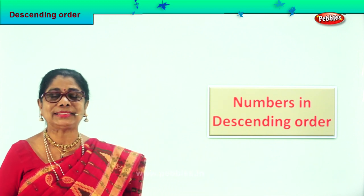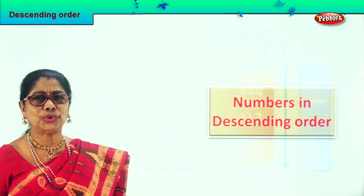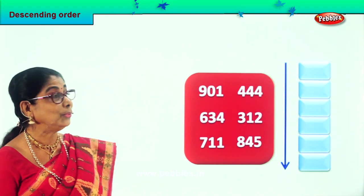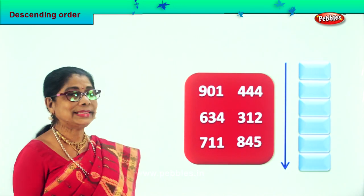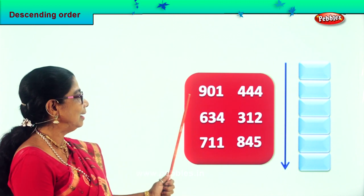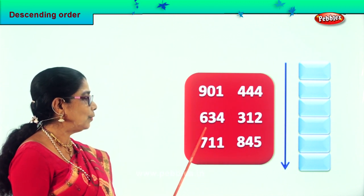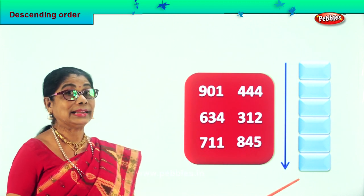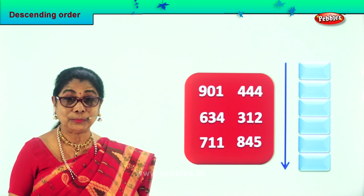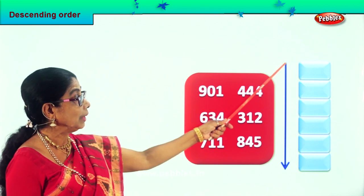Let's take our first sum. I am sure you are going to enjoy. Just as you learned ascending, we are going to do descending order. Again here, one, two, three, four, five — there are six numbers given to us. We have to find the biggest one and put it on the top.